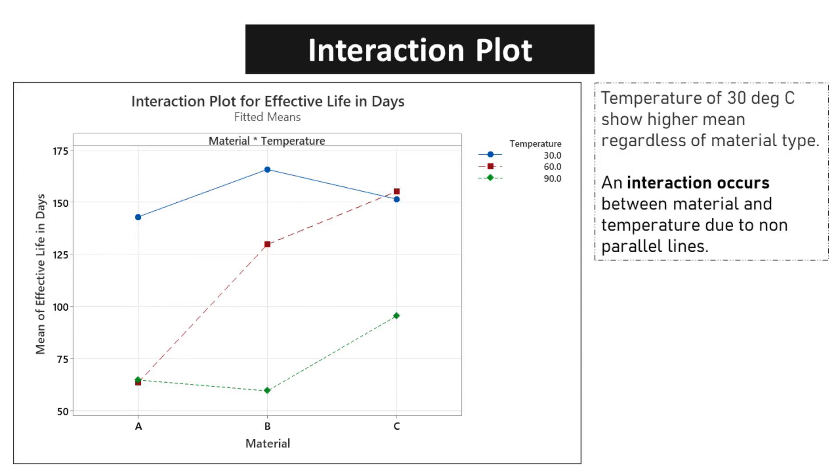Temperature of 30 degrees Celsius shows higher mean regardless of material type. An interaction occurs between material and temperature due to non-parallel lines.